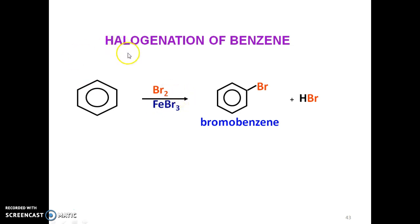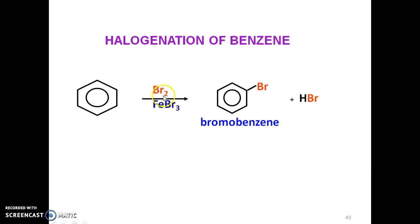As we know, benzene undergoes a substitution reaction — more accurately, an electrophilic substitution reaction. Every carbon in benzene has one hydrogen, so we substitute one hydrogen from benzene with the halogen, in this case Br. So we substitute one H with Br, and the side product is HBr.